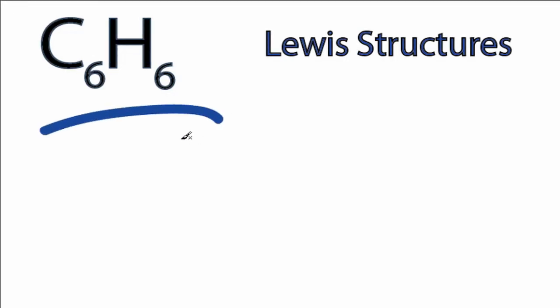For the C6H6 Lewis structure, there are three ways we can draw it. The most common is benzene. I'll explain how to do that, and then I'll show you the other two ways that we can draw the C6H6 Lewis structure.